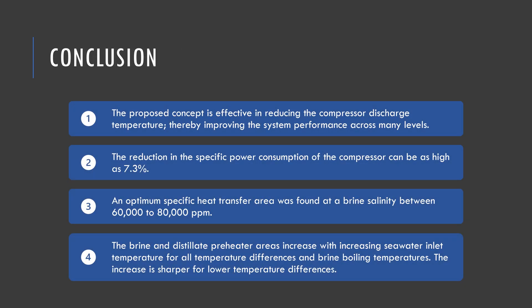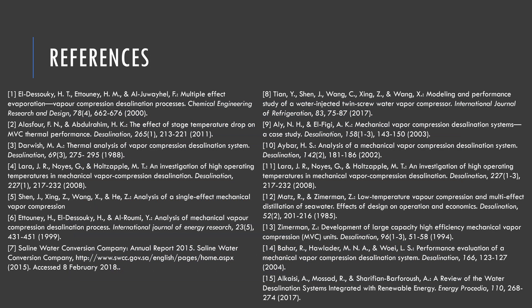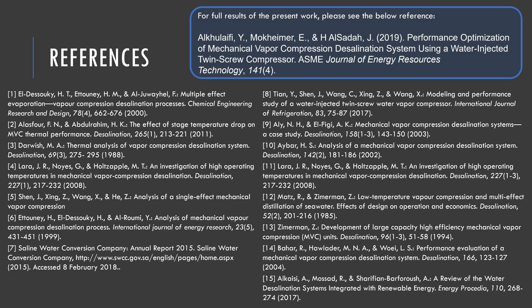To sum up, the proposed concept is effective in reducing the compressor discharge temperature, thereby improving the system performance across many levels. The reduction in specific power consumption of the compressor can be as high as 7.3 percent. An optimum specific heat transfer area exists at brine salinities between 60,000 and 80,000 parts per million. Finally, the brine and distillate preheater areas increased with increasing seawater inlet temperature for all temperature lifts and brine boiling temperatures, with the increase being sharper for lower temperature differences. To find out more about our work, please see the reference. Thank you.